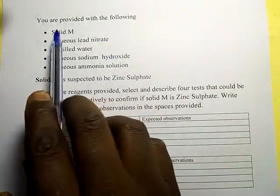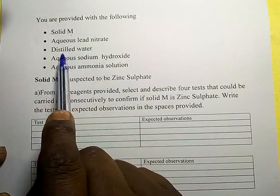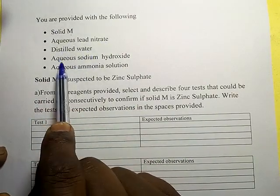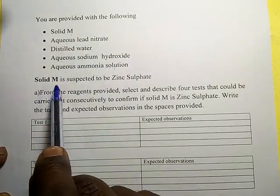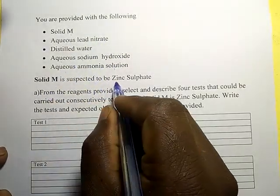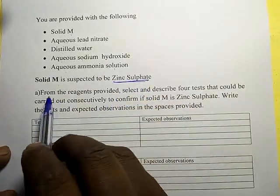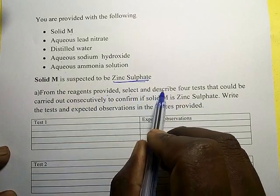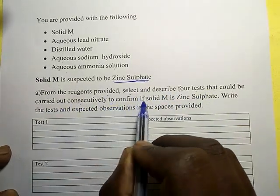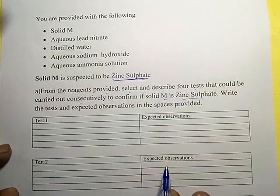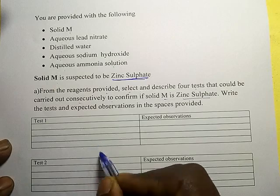Let me give you another example. We are provided with the following: solid M, aqueous lead nitrate, distilled water, aqueous sodium hydroxide, and aqueous ammonia. Solid M is suspected to be zinc sulfate. From the reagents provided, select and describe four tests that could be carried out consecutively to confirm if solid M is zinc sulfate.